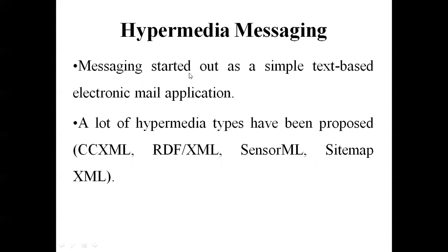In the email-based application, messaging started out as a simple text-based electronic mail application — we are going to send only simple text. A lot of hypermedia types have been proposed, not just email. Different hypermedia types involved in email-based applications include CC XML, RDF XML, sensor-based ML, and site map XML — these are the different hypermedia types proposed in hypermedia messaging.